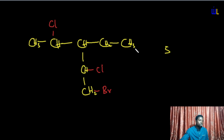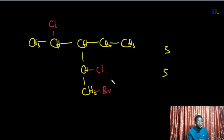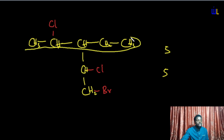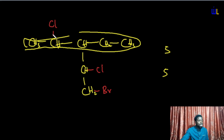Since whatever end we count from gives the same number of carbon atoms — five in each case — we have multiple chains tied as the longest continuous chain. The question is: which one do we pick? Rule four says to find out which chain has the most substituents attached to it. If we take the straight chain, we find it has just two attachments.